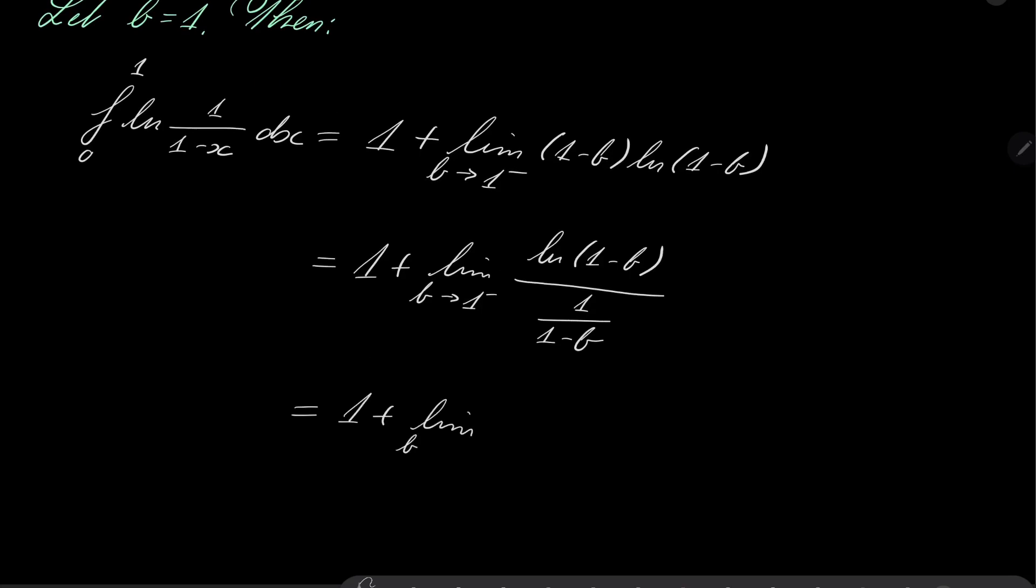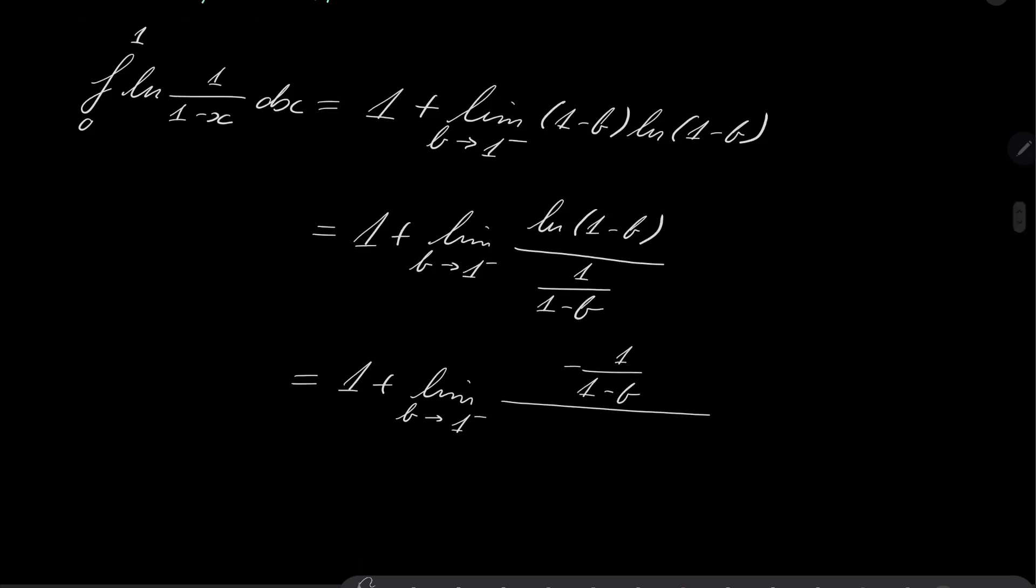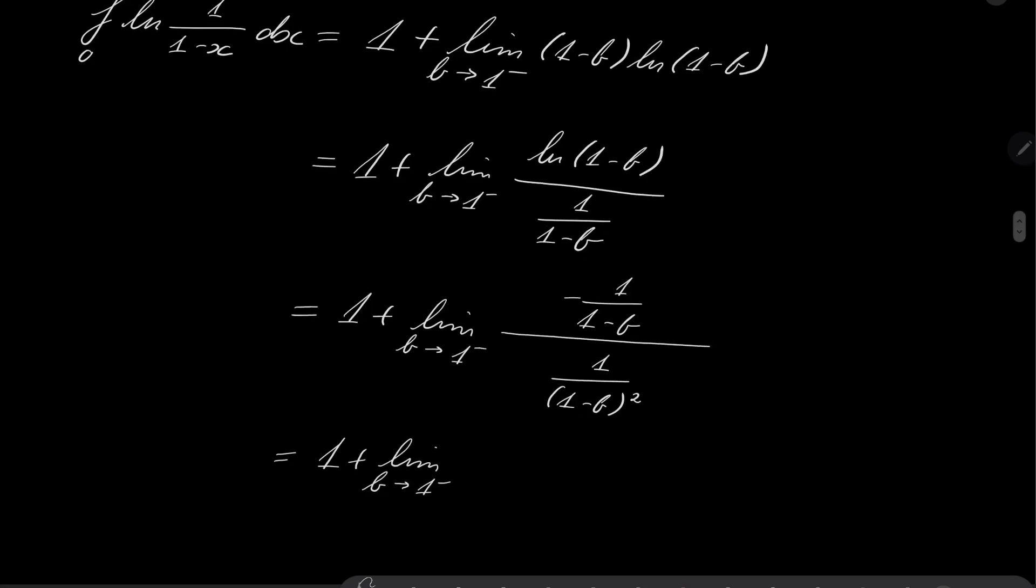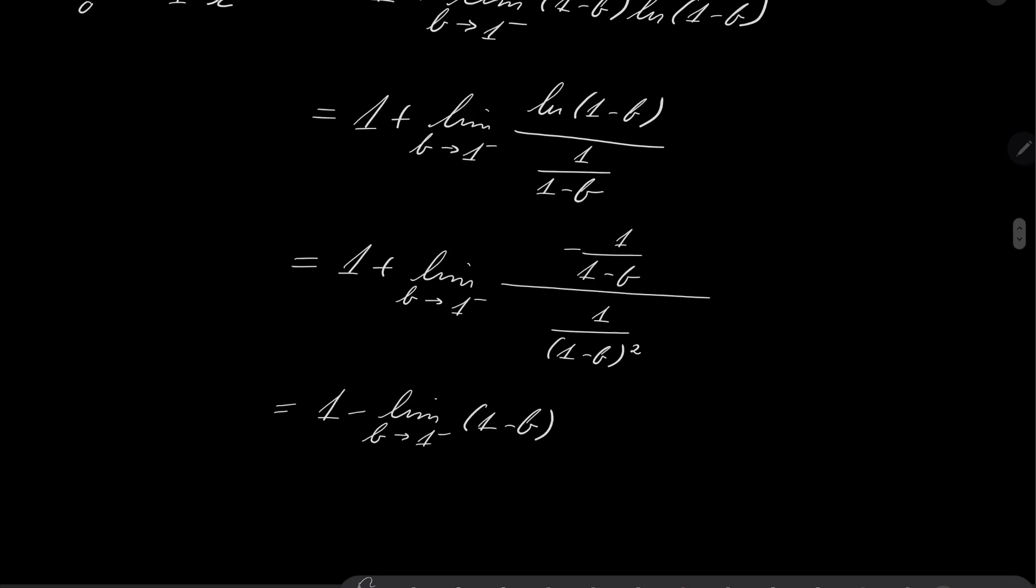It's 1 plus the limit as b goes to 1 from the left-hand side. The derivative of the natural log is minus 1, 1 minus b, and the derivative in the denominator, it's 1, 1 minus b squared. Yes, it is. So it is 1 plus the limit as b goes to 1 from the left-hand side. So it's 1 plus the limit of minus, oh you know what, we can put this minus outside, of 1 minus b, 1 minus b. So it's 1. And maybe let's write it here, I have used by the L'Hôpital's rule. So it's 1 in this case.